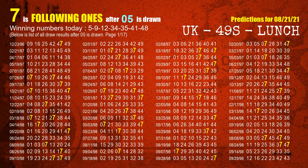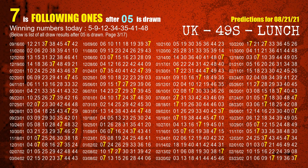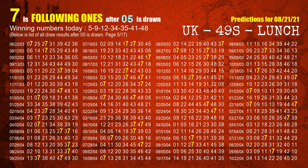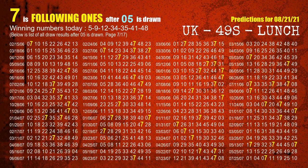First, we'll find out the following ones through today's result. Following numbers refer to those numbers being picked on the next draw after this one, and following ones are the units digit of those following numbers. The first winning number is 05. We list all draw results after a draw with 05 as a winning number — the most frequently following units digit is 7. We highlight units digit 7 in yellow for you.